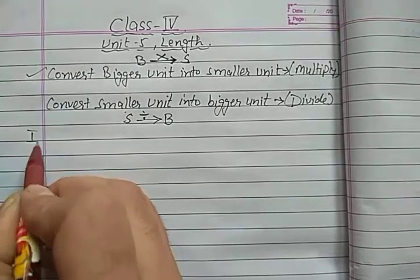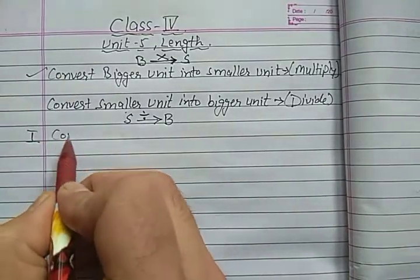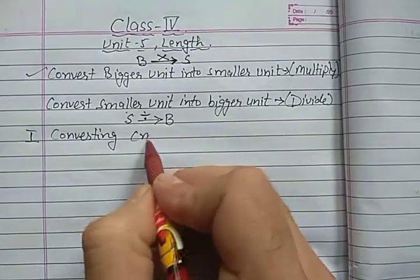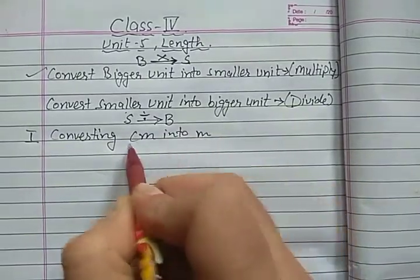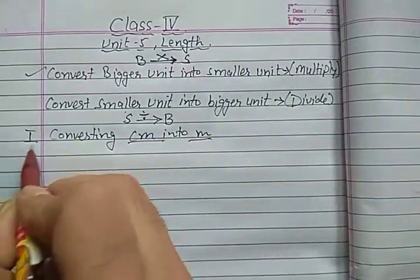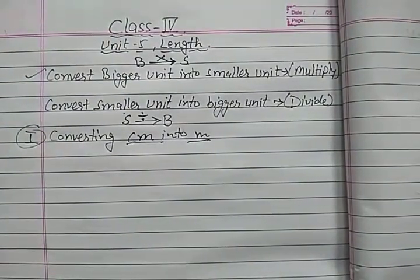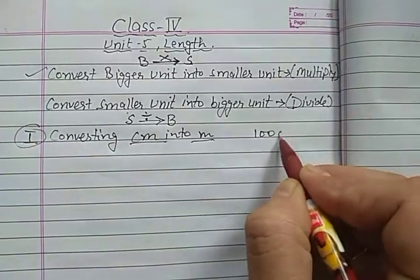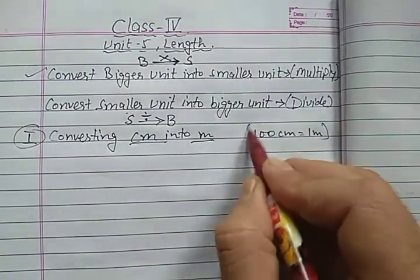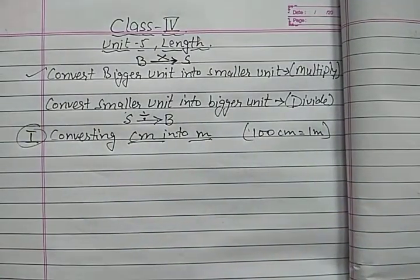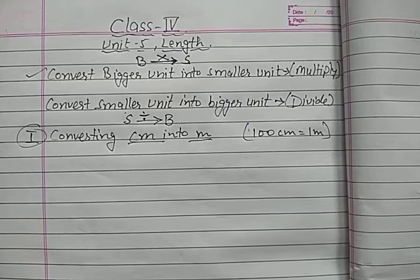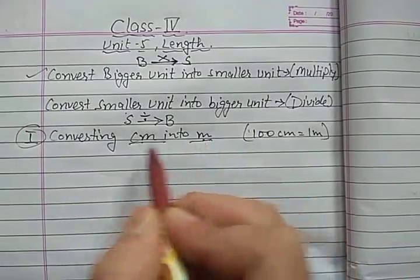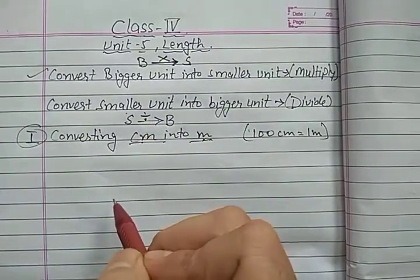First of all, we will convert centimeters into meters. Again, what you have to keep in mind is the relation between meter and centimeter. You know that 100 centimeters makes 1 meter. So whenever we have to convert centimeters into meters — centimeter is a smaller unit, meter is a bigger unit — small to big, what we have to do? We have to divide.